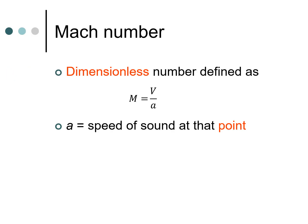Mach number is a dimensionless number defined as V by A, where V is the velocity at a given point on the body and A is the speed of sound at that same point. So essentially this is also a point property. The speed of sound varies with temperature and is typically 332 meters per second at standard sea level, but it's going to be different at different points in the flow.